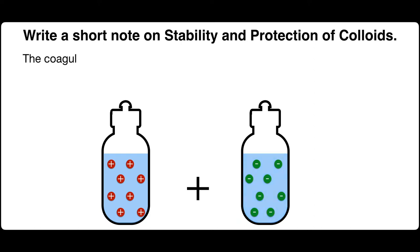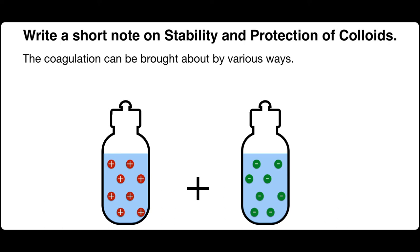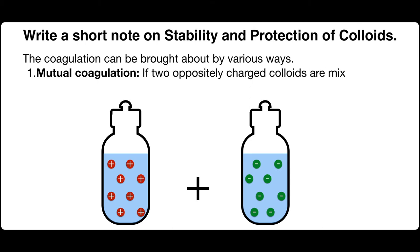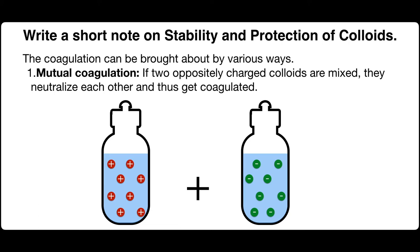Coagulation can be brought about by various ways. First is mutual coagulation: if two oppositely charged colloids are mixed, they neutralize each other and thus get coagulated.